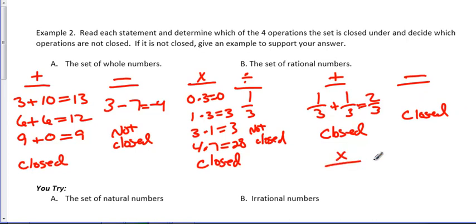Multiplication. Try to think of something that's going to produce an irrational number, and you're not going to find it. So once again, we're closed here, and the same is true for division.